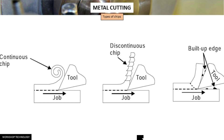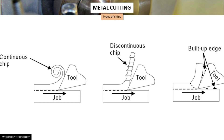This figure here shows a discontinuous chip coming out during machining. In this type of chip, the chip is produced in the form of small pieces. This type of chip is obtained while machining brittle materials like cast iron, brass, and bronze. Fairly good surface finish is obtained and tool life is increased with this type of chip.